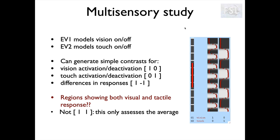But what about areas where we're seeing a response to both vision and touch? You might think that a +1 +1 contrast would answer that question, but it doesn't. It simply asks when do we have an average of these two which is greater than zero, or greater than baseline. The average could be greater than baseline simply because one of them is very strong and the other is still zero. So this +1 +1 contrast is not selective for areas where we know that both are significantly different from baseline. We need to formulate that kind of question in a different way.